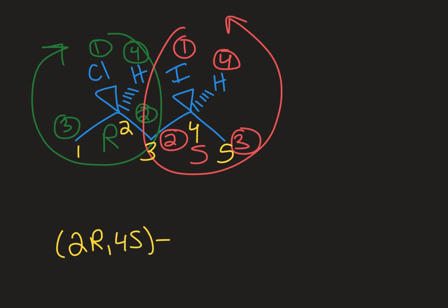So I would have then a (2R,4S) out in front. That tells me what chiral carbons I have, their absolute configurations, and their locations because of the two and the four, the locants. So those are in numerical order. I'm still going to alphabetize in terms of where the substituents are. So (2R,4S)-2-chloro-4-iodopentane.